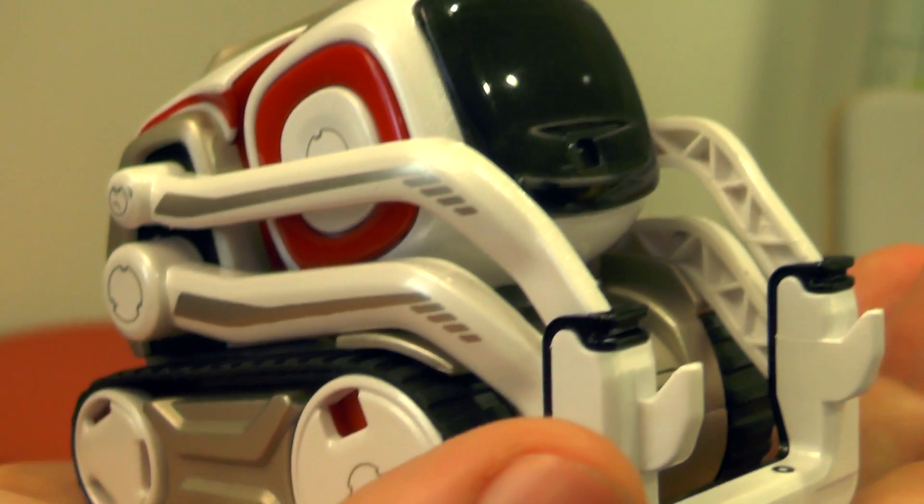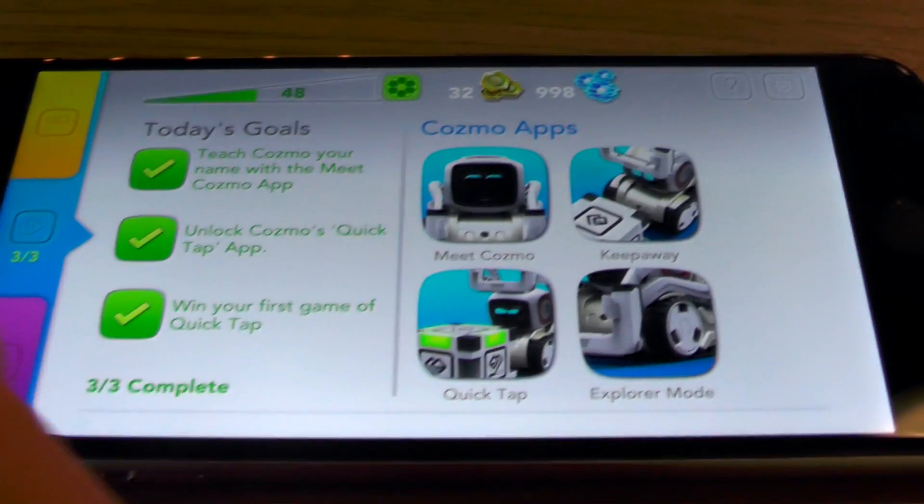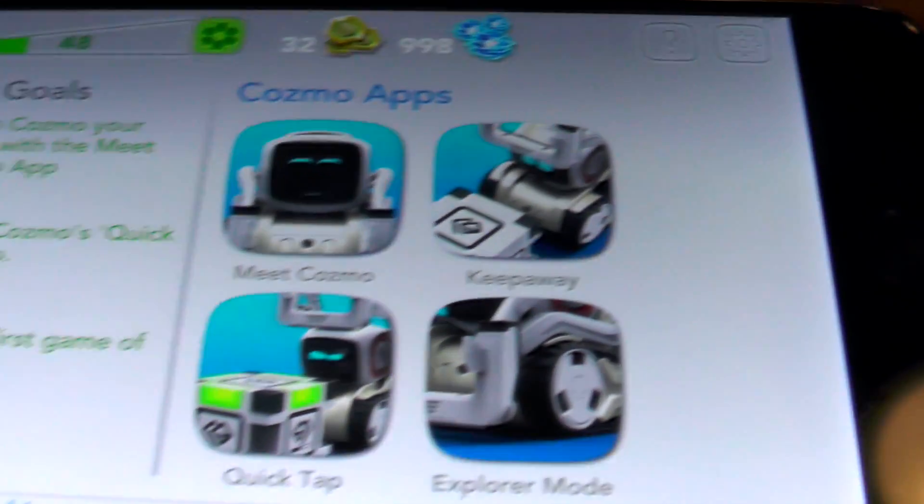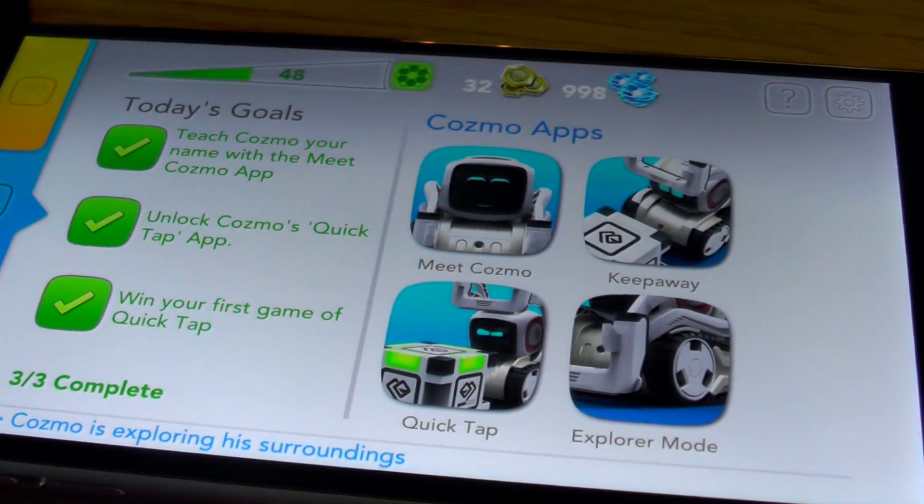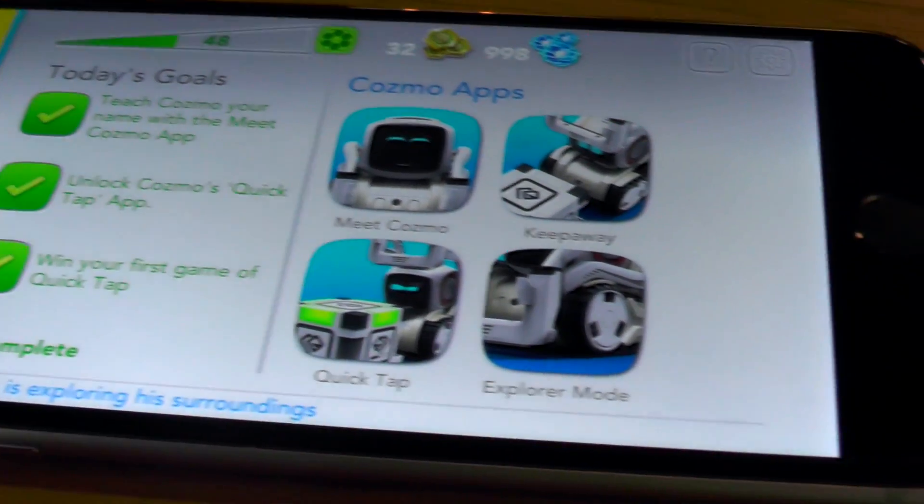The phone is the other very important component because while Cosmo itself is the incarnation of the robot, the AI and the computer vision is actually running on your mobile device. The mobile device—tablet, phone, anything like that—is a very important component of the play experience.